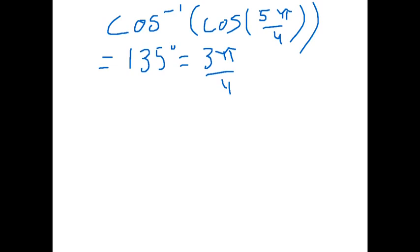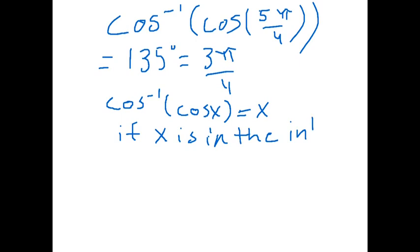According to the inverse property, cosine inverse of cosine x is equal to x, only if x is in the interval of 0 to π.